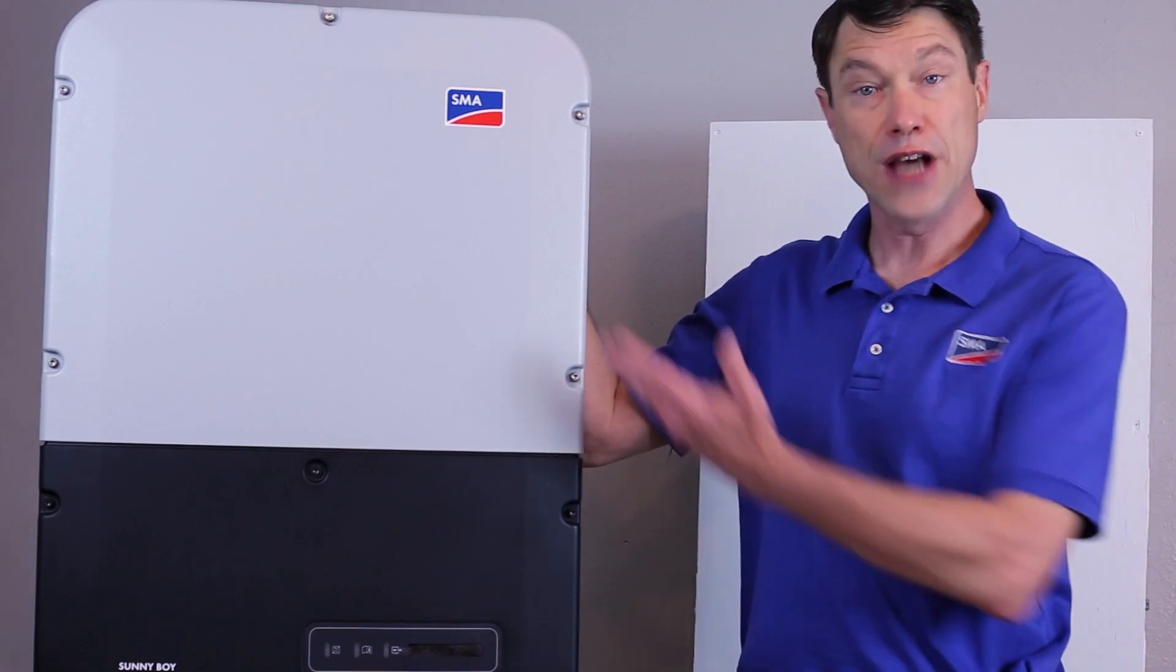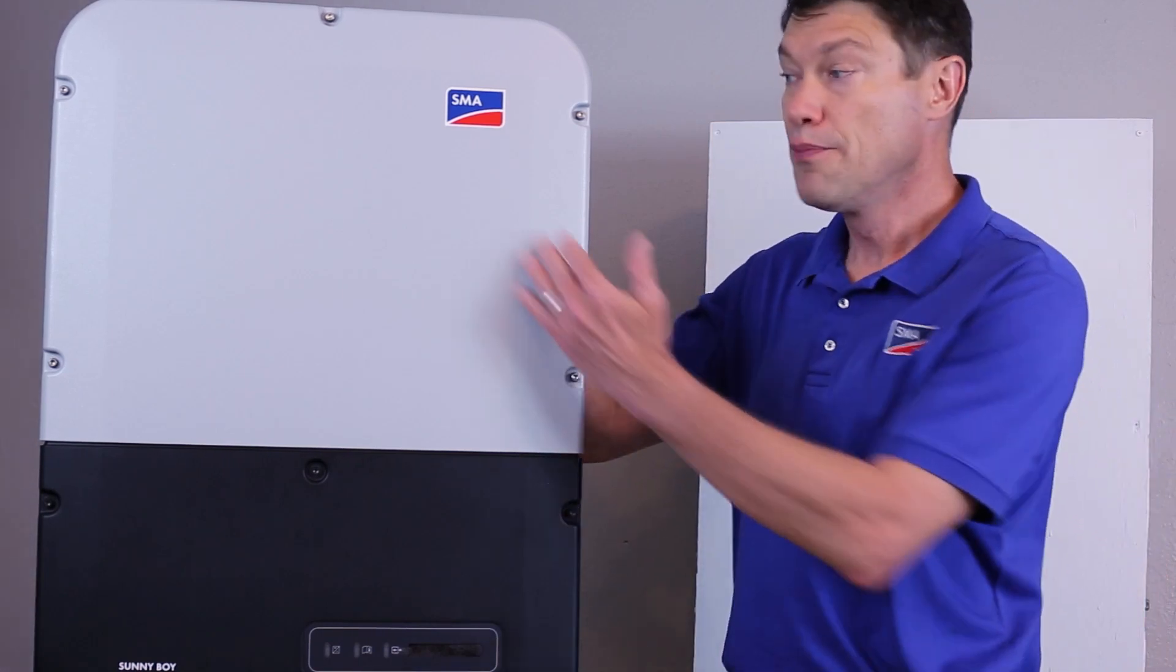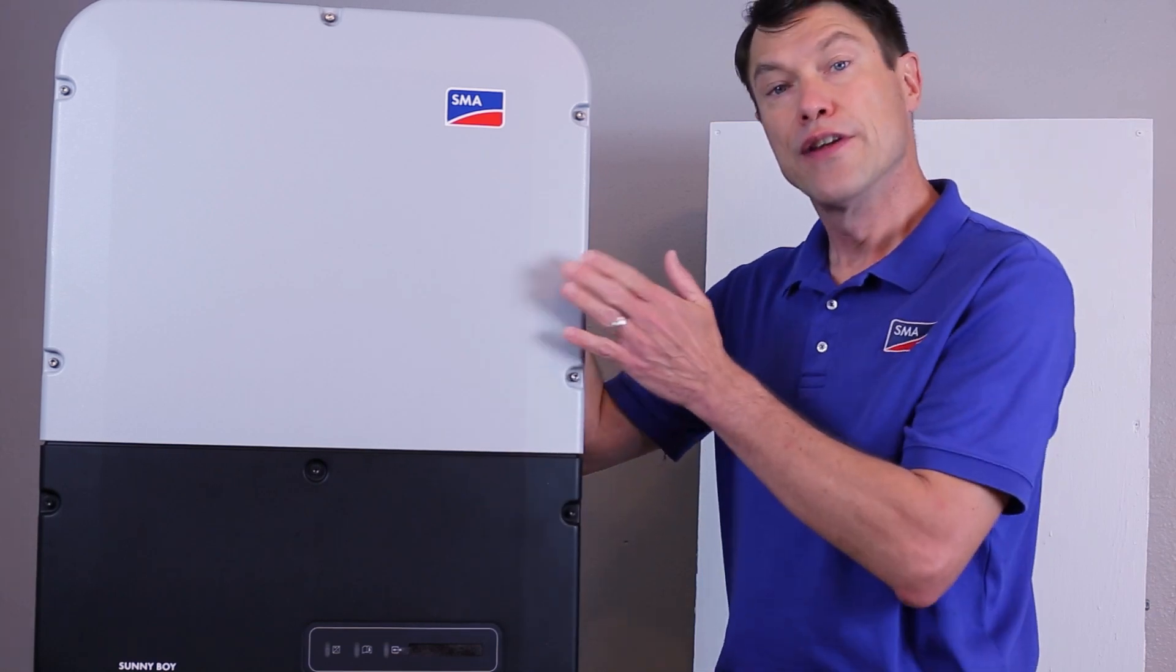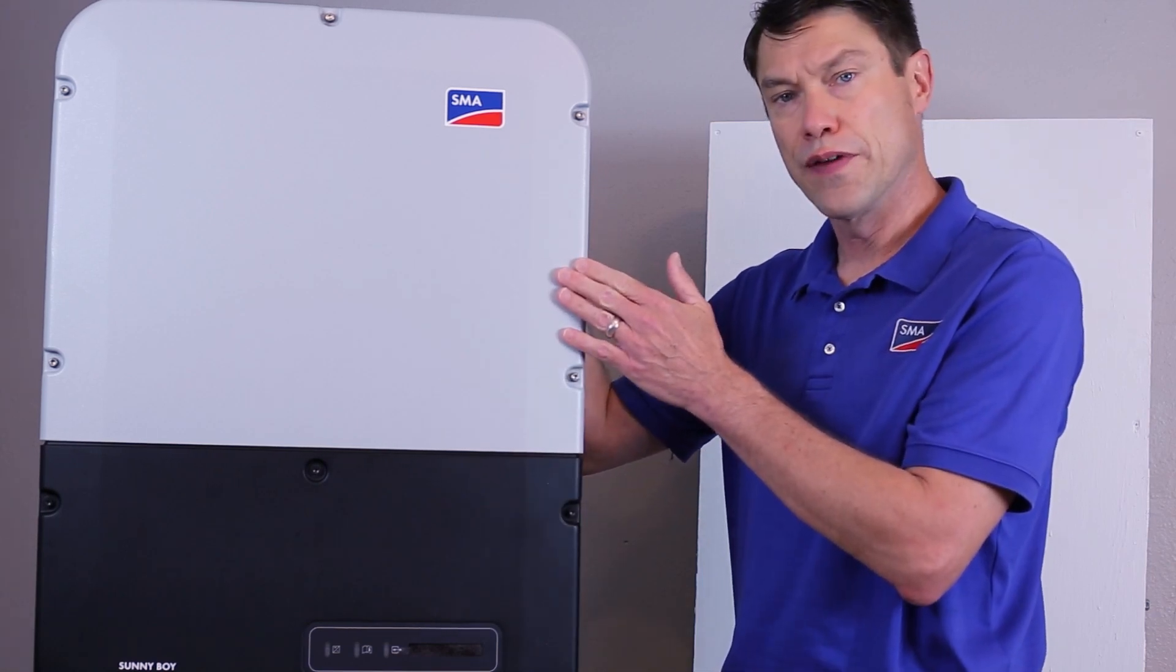Here we have the Sunnyboy inverter. The top section is referred to as the power unit behind this gray lid. This is where all the power conversion electronics resides. This upper lid should never have to be removed in the field.